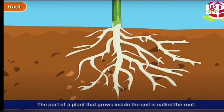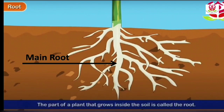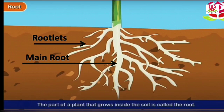The part of a plant that grows inside the soil is called the root. Most plants have a thick main root that grows deep into the soil. The main root has thinner side roots called rootlets that grow from it.